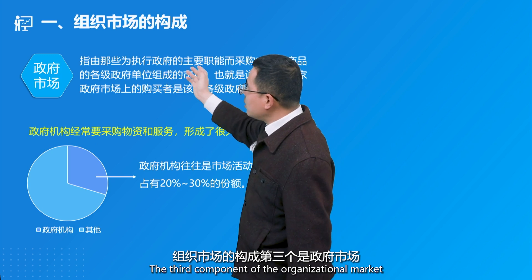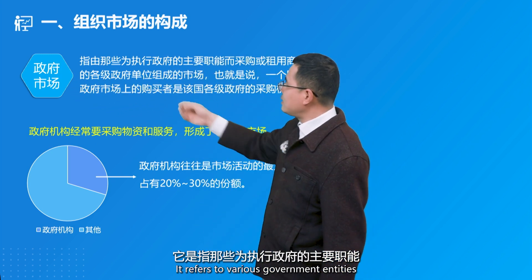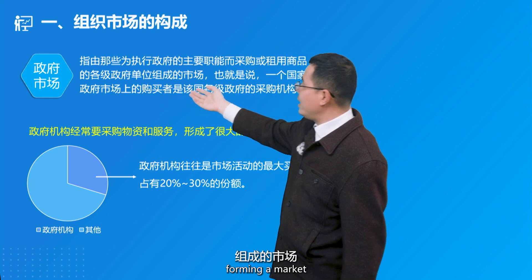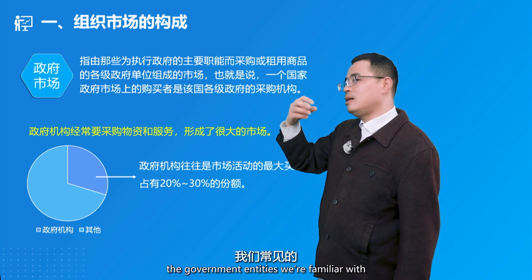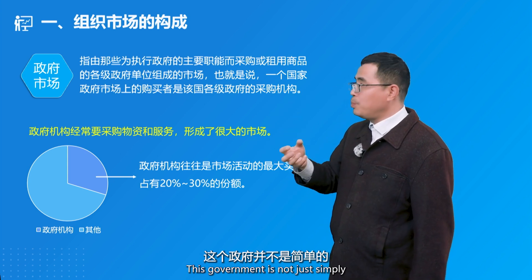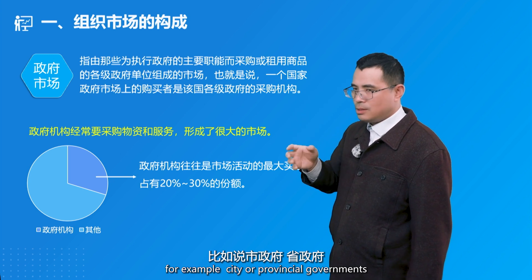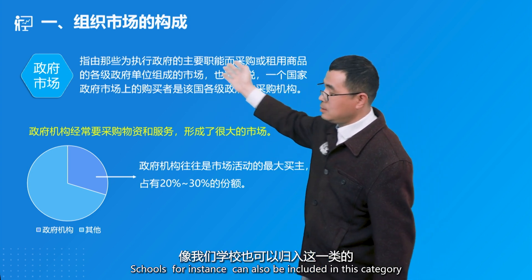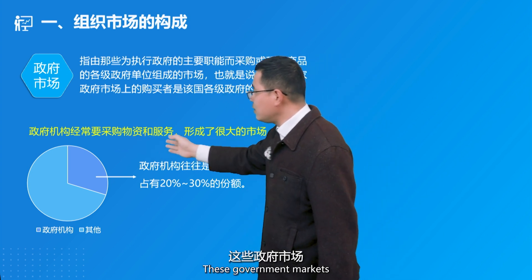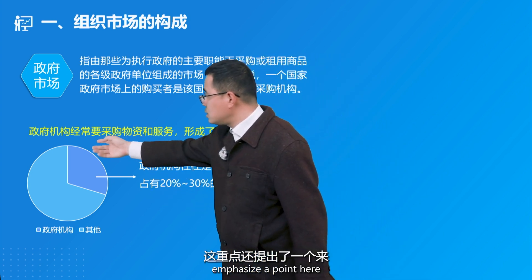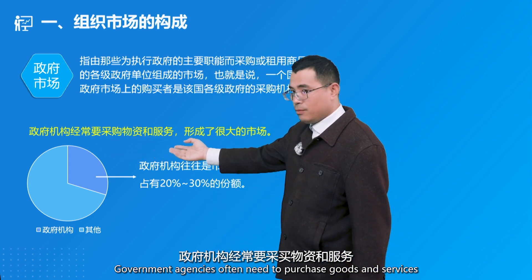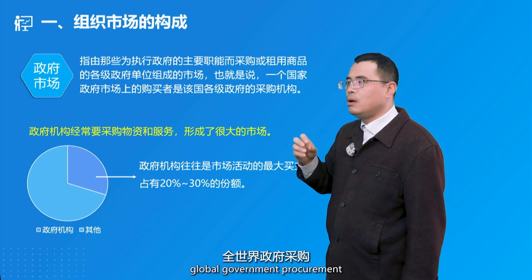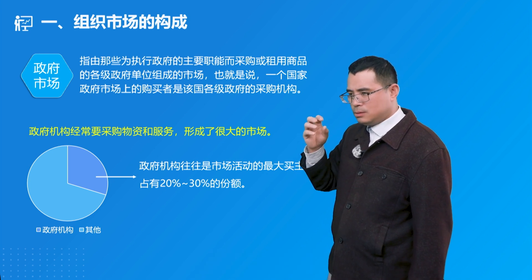The third component of the organizational market is the government market. It refers to various government entities that purchase or lease goods to carry out the government's primary functions. Government entities include not only city or provincial governments but also schools and other institutions. Government markets are emphasized because government agencies often need to purchase large quantities of goods and services, creating a very large, strictly regulated market globally.